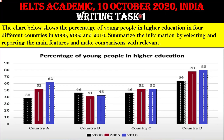Today's Writing Task 1 question is: 'The chart below shows the percentage of young people in higher education in four different countries in 2000, 2005, and 2010. Summarize the information by selecting and reporting the main features and make the comparison very relevant.' Here is a bar graph showing the percentage of young people in higher education.